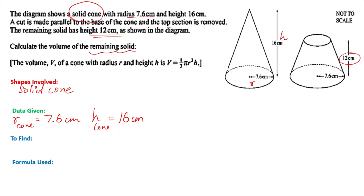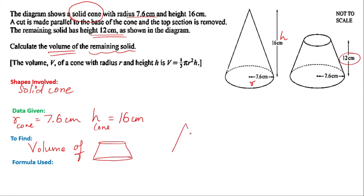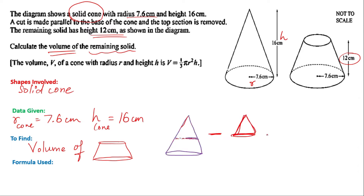The question is very simple — they're just asking you to find the volume. A shape like this is called a frustum. A frustum is formed when you have a cone, a parallel cut is made, and the top part is removed. When you subtract the top part, which is again a cone, what you get is a frustum.